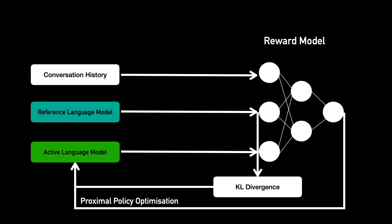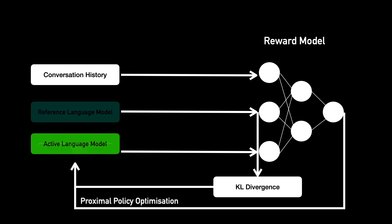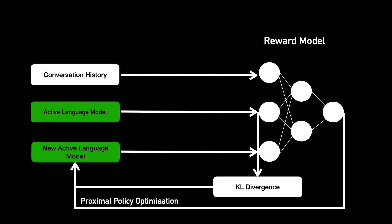Over time, as more and more people have conversations with ChatGPT about a variety of topics, it gets better at responding to them. Every once in a while, the models are versioned and the active LM becomes the reference and a new copy of the active LM is trained further.